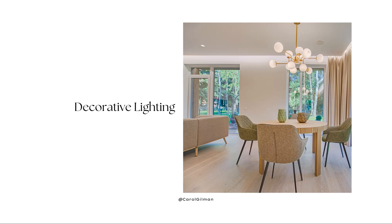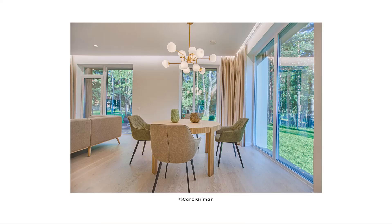A third type of lighting we can add to a room is decorative lighting. In addition to providing overall lighting, decorative lighting is where we really bring in our design style — it becomes part of the decor and design of a room. Think of a dining room chandelier: we choose one that matches our design style, it provides overall and task lighting for the dining table, and at the same time it looks beautiful and becomes a very important part of the interior design of that space.